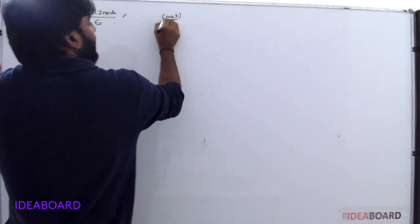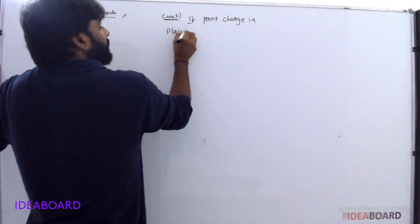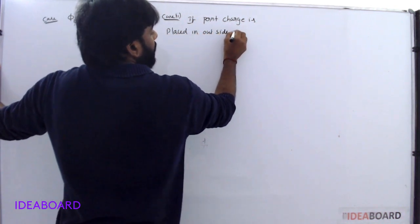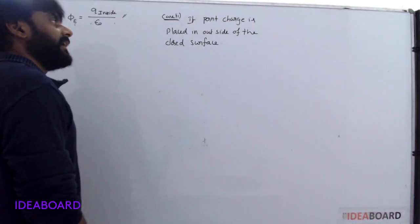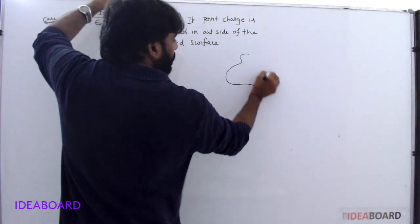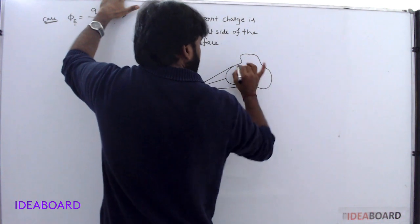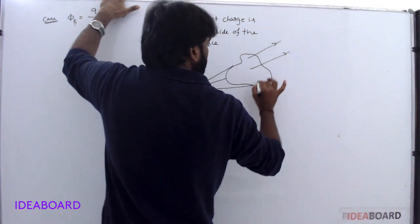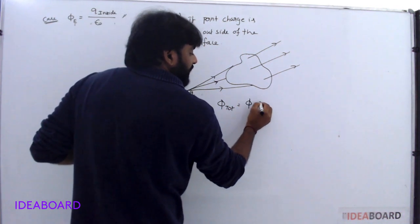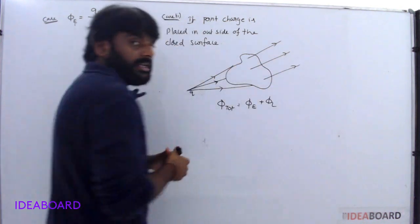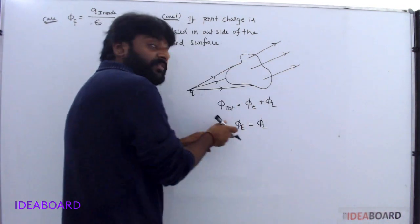In the second case, if the point charge is placed outside of the closed surface, consider that the charge is outside on the closed surface. Total flux means entering flux plus leaving flux. In this case, entering flux is equal to leaving flux. Entering flux is taken as negative, leaving flux is taken as positive — meaning inward flux is negative and outward flux is positive.